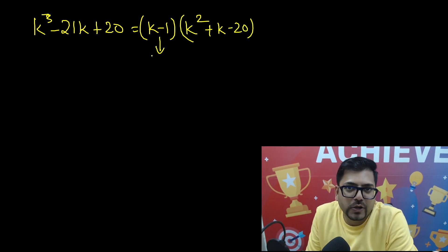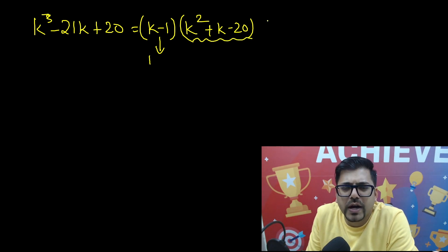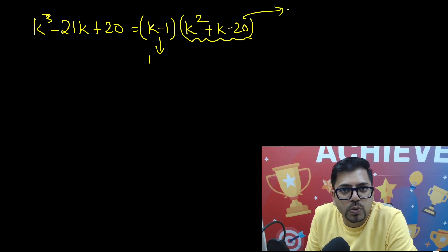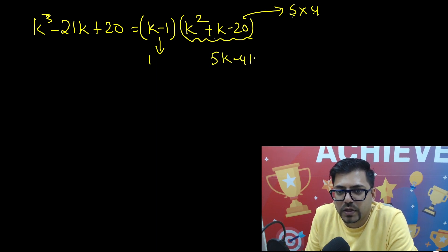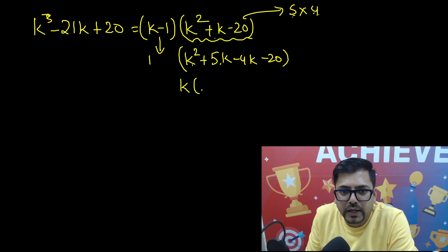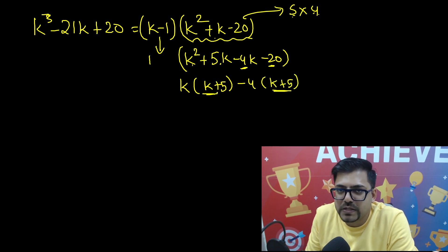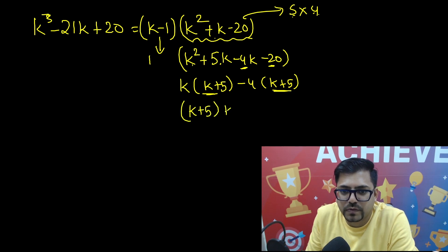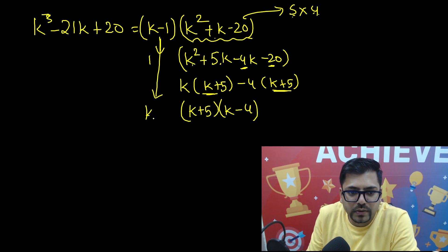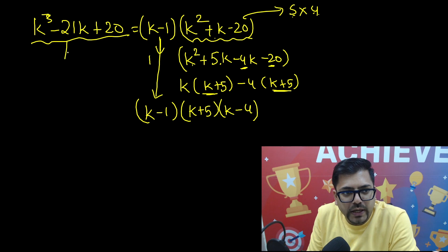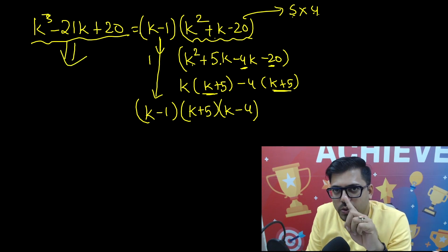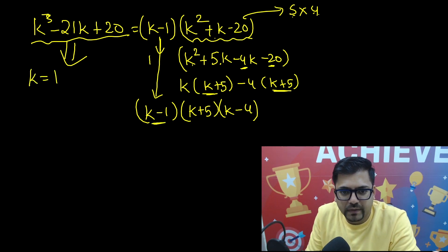Now we need to factorize the quadratic k squared plus k minus 20 using middle term splitting. We need to break 20 into two parts that multiply to 20 and differ by 1, so we use 5 and 4. We write it as k squared plus 5k minus 4k minus 20, taking k common from the first two terms gives k(k plus 5), and taking minus 4 common from the last two gives minus 4(k plus 5). So the factorization is (k plus 5)(k minus 4).